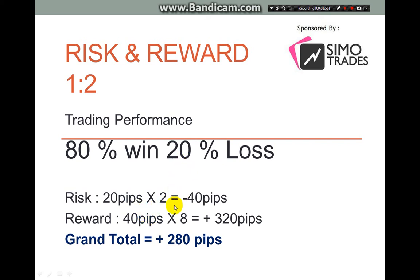With 20% loss, we are minus 40 pips. The reward side: we put 40 pips return, and due to 80% win, we get 320 pips. After subtracting the loss from the reward, the grand total is 280 pips. So this is the result when we have an 80/20 trading performance.